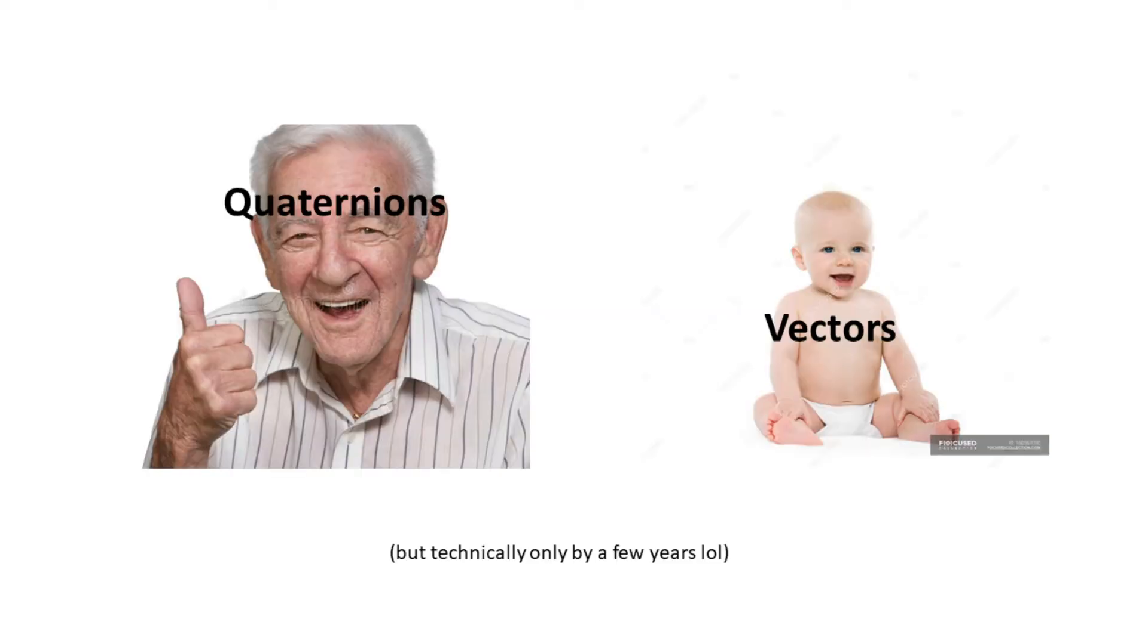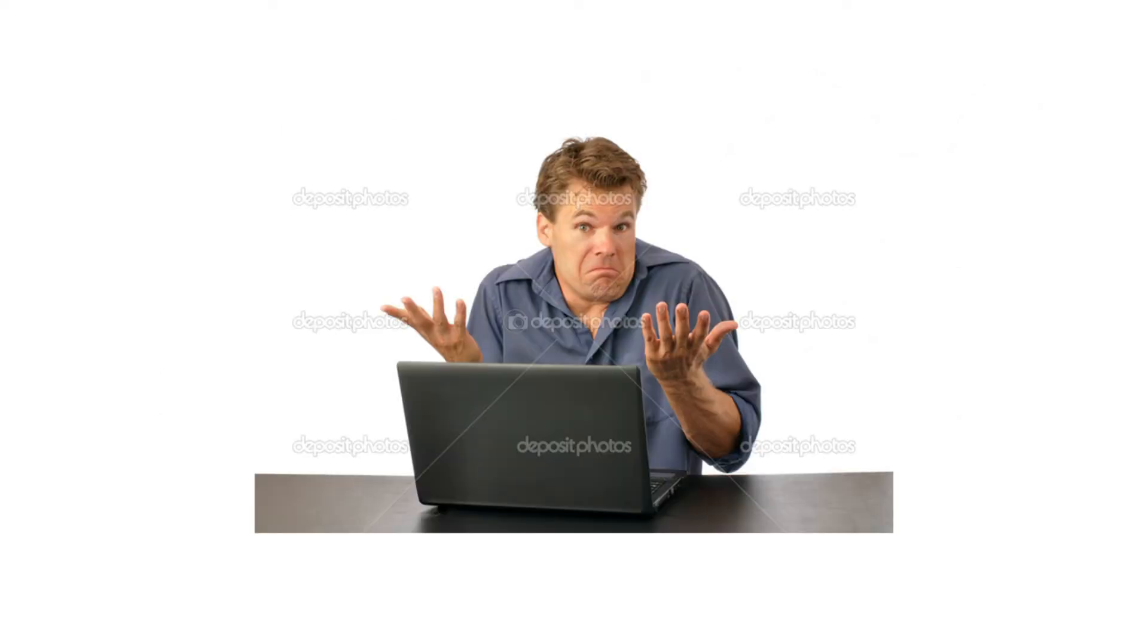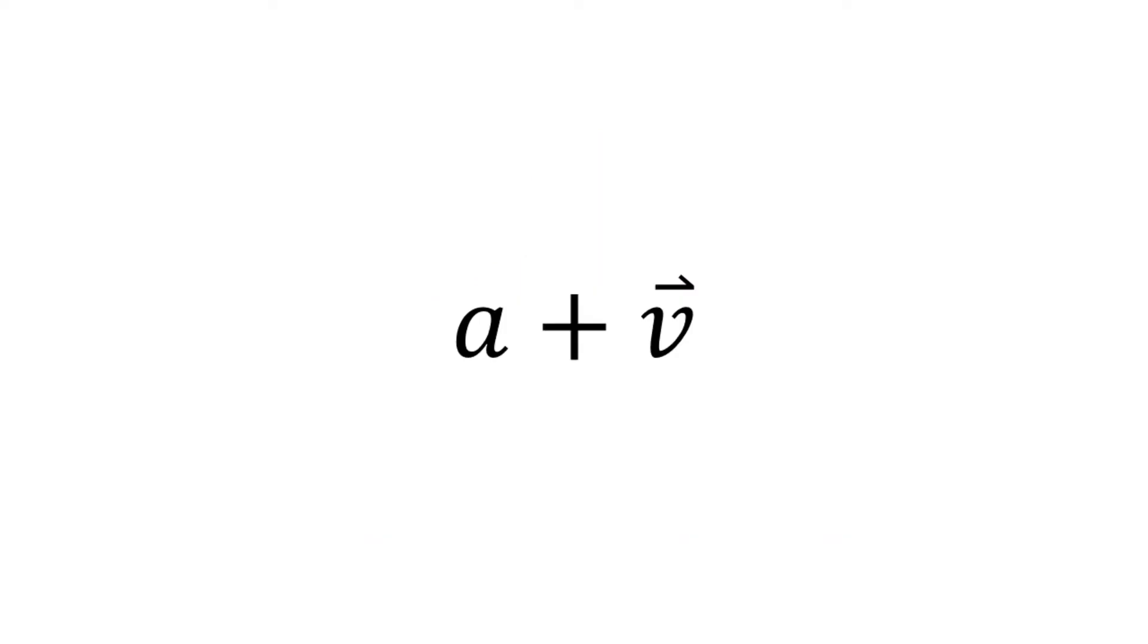Quaternions were actually invented before vectors, but since vectors exist now and most of you understand them, I'll use them to help with the explanations. Quaternions are basically a scalar plus a vector. Now this might sound weird.